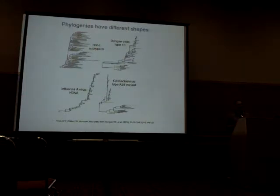For example, influenza virus has a pectinate-like shape because they have a higher rate of evolution, shorter period of infection. There is a main trunk and all of those short branches that go extinct very rapidly.